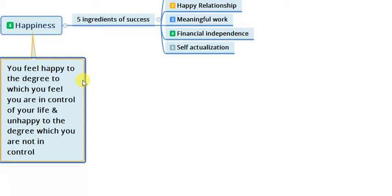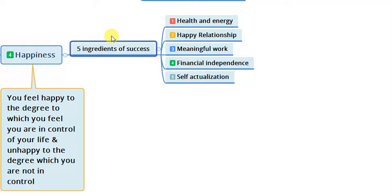Happiness is totally related to control — how much you are in control of your life. Yogis and sadhus living in the Himalayas are usually happy because they are totally in control of their own lives. Now let's talk about the five ingredients of success that the author explains. You become what you think about — if you think you are happy, you will be happy. This is a famous concept from 'Think and Grow Rich.'